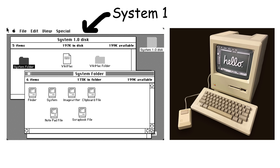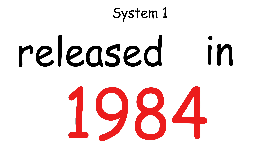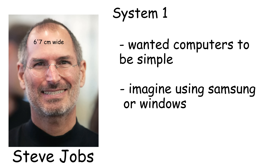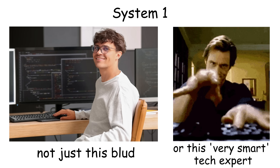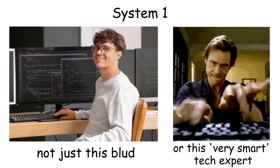System 1 was Apple's first operating system for the Macintosh, released in 1984. It was created because Steve Jobs wanted computers to be simple enough for regular people to use, not just programmers and tech experts.